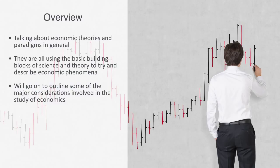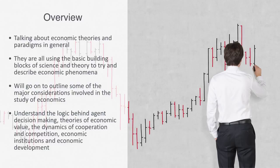From this definition, we'll go on to outline some of the major considerations involved in the study of economics, including trying to understand the basic logic behind the decision making of agents, theories of economic value, the dynamics of cooperation and competition, economic institutions, and economic development. We're starting the course off with this discussion around the bigger picture of economics and science in general, because the domain of economics aspires to be a science, but its status as a science is sometimes brought into question. So part of what we'll be doing in this module and coming videos, we'll be trying to give some outline to what it means to be a scientific domain.